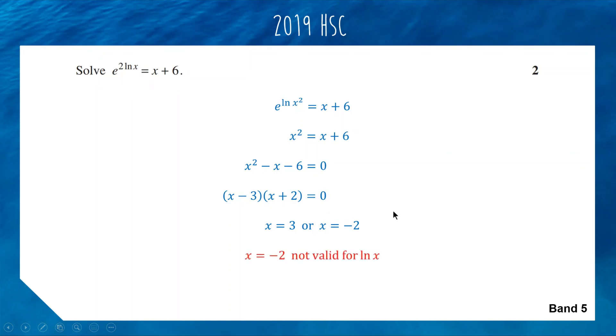Negative values are not valid for log x. Therefore, our only solution is x equals 3. That's why this is a band 5 question, because a lot of people were able to solve the equation and get two values, but you've got to keep in the back of your mind you can't do log of negative. The band 5 students crossed off that answer and just left x equals 3.